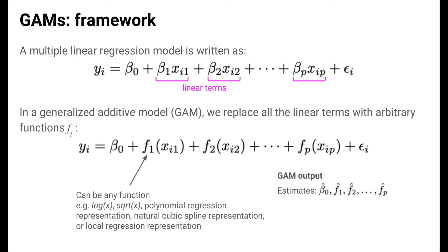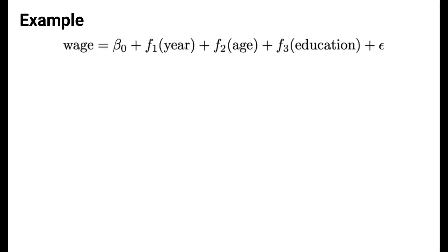Let's take a look at an example of what this looks like on a real dataset. Say that we want to model hourly wages as a function of the year, an individual's age, and education level. A general GAM formulation is shown here. We say that wage is a function of an intercept term to set the baseline wage, as well as arbitrary functions of year, age, and education level.